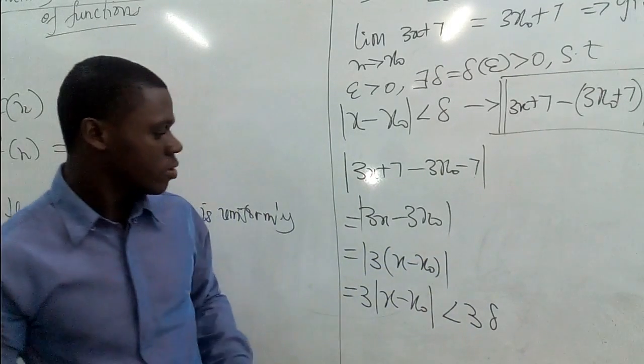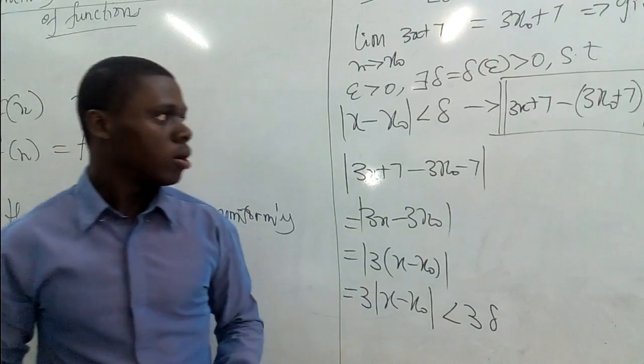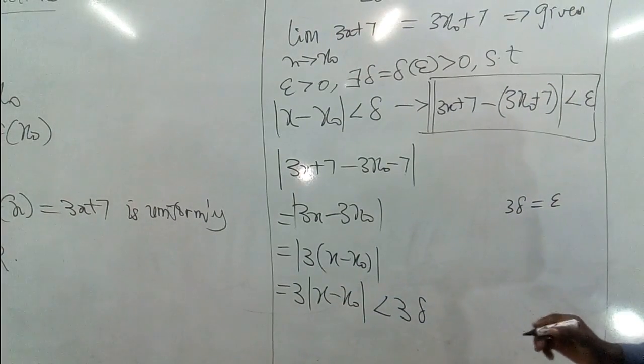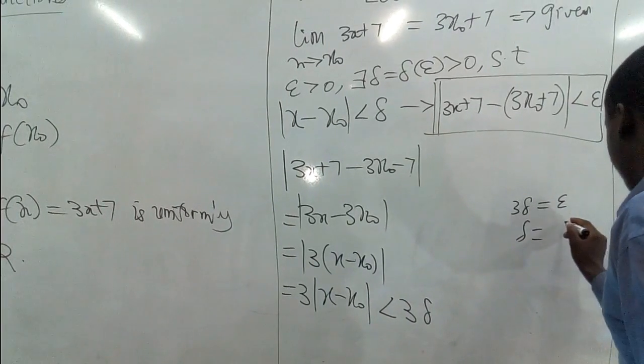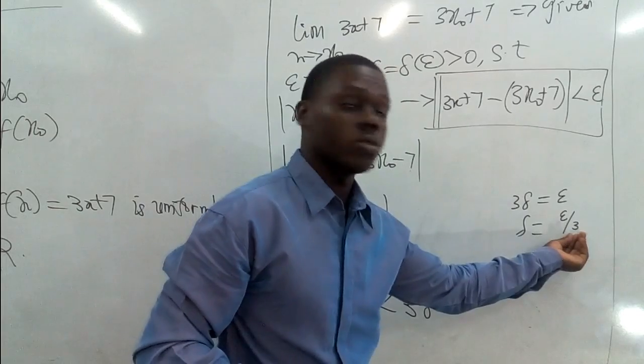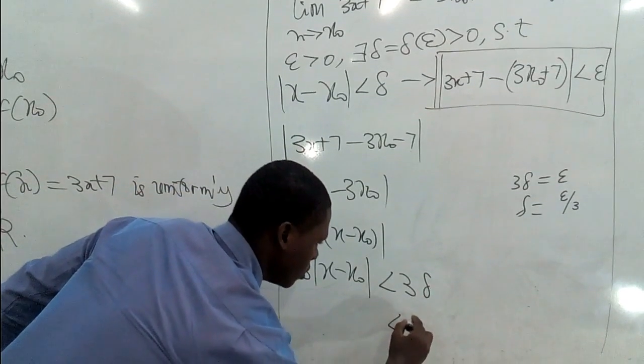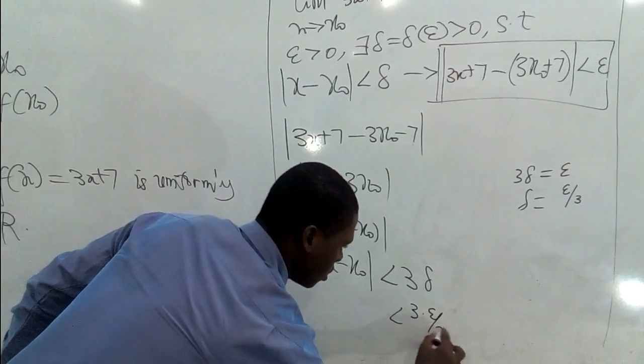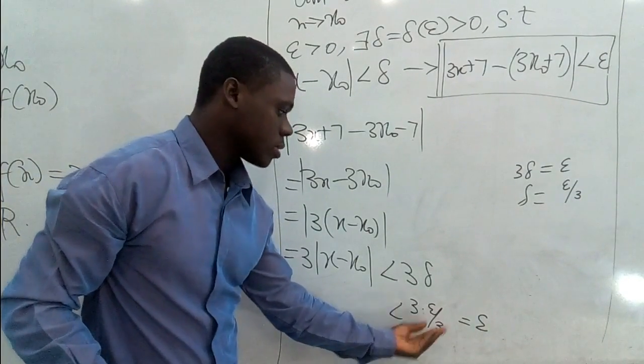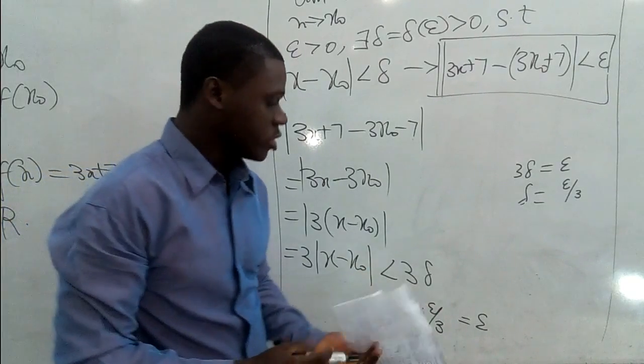Now, you agree with me that at this point, we don't have any x₀ here. So if I want to select delta such that to lead us to epsilon, then I will go somewhere and hide, then quickly equate this one to epsilon. Then I will make delta the subject. So delta here equals epsilon over 3. So we realize that the selection of epsilon here doesn't depend on x₀. So we have that thing in mind. So we realize that by putting delta here, we have everything here to do. Now, 3 multiply by epsilon over 3, which leads us to epsilon. So the most pressing point here is that our selection of delta doesn't depend on x₀.